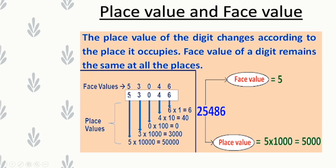Place value of 5 is 5 × 10,000 = 50,000, because 5 is in the 10,000's place. Face value of 5 is 5 itself. In another example, the number 25,486: the face value of 5 is 5, whereas the place value of 5 is 5 × 1000 = 5000, since 5 is in the 1000's place.